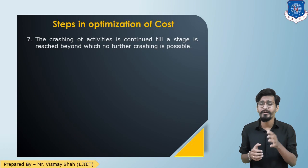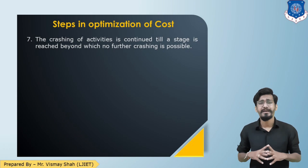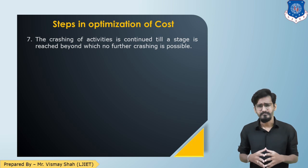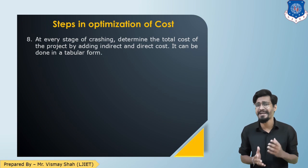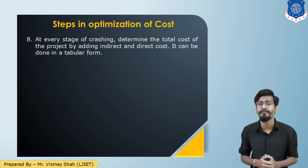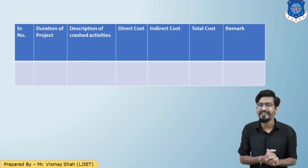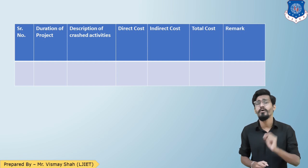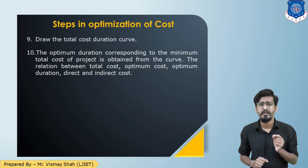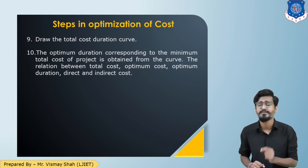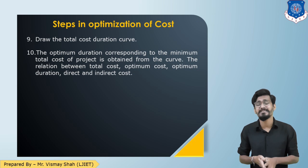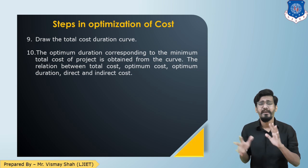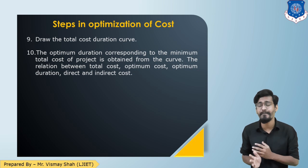Continue until you reach a stage when you cannot reduce the project duration further. At every stage of crashing, determine the direct cost, indirect cost, and total cost. Prepare a summary table, then draw the total cost curve. The optimum duration and optimum cost are found from that graph.